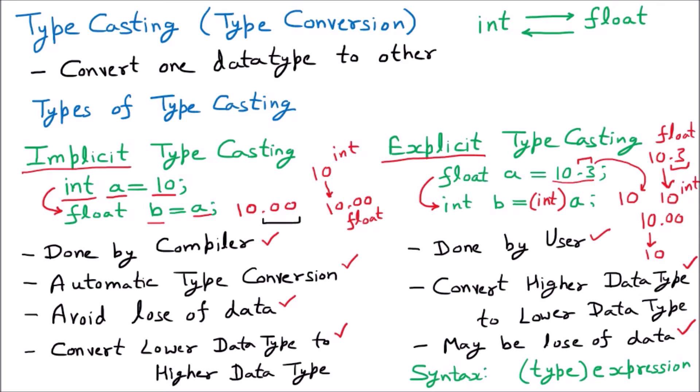And one more thing you can see that while converting from int to float, we have not mentioned anything. But while converting from float to int, we have mentioned int in the bracket, meaning explicitly the user is forcing you to convert to integer. So that is the difference between implicit and explicit type conversion.